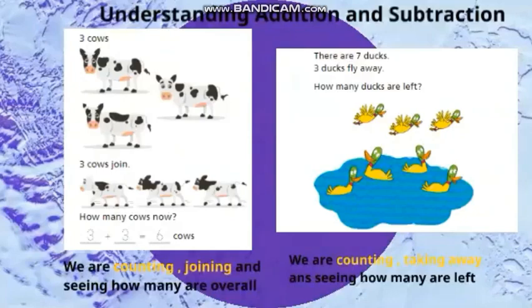On the other hand, if I want to take away or subtract, let's look at the ducks swimming in the pond to the right. There are seven ducks in the pond and three of them flew away. So how many do I still have in the pond? I can count them easily. Let's count together.